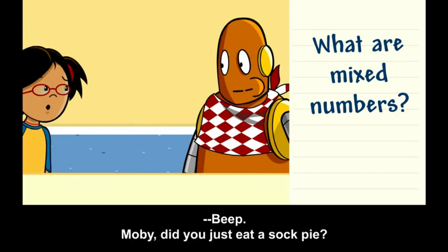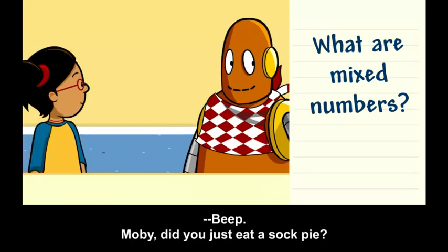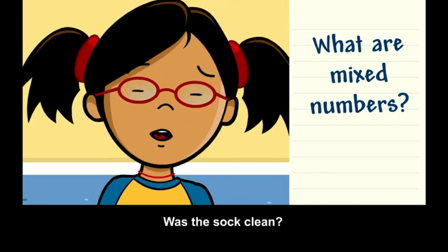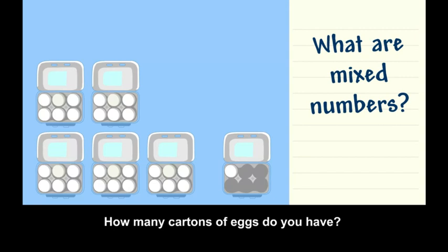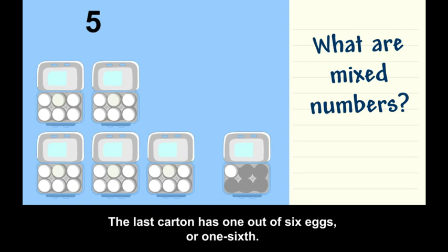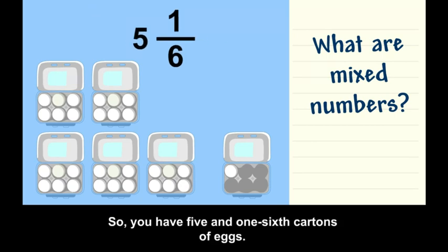Moby, did you just eat a sock pie? Was the sock clean? How many cartons of eggs do you have? There are five full cartons. The last carton has one out of six eggs, or one-sixth. So you have five and one-sixth cartons of eggs.